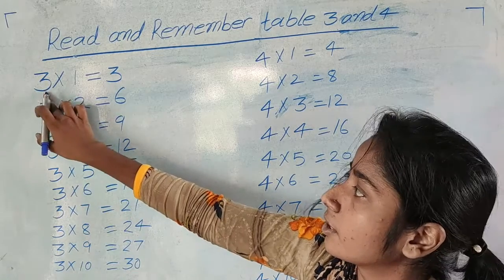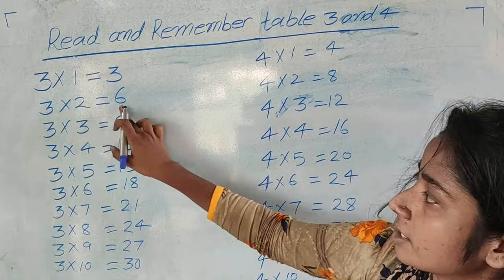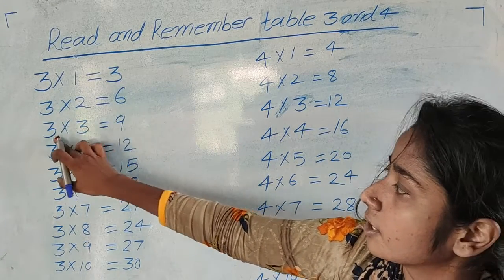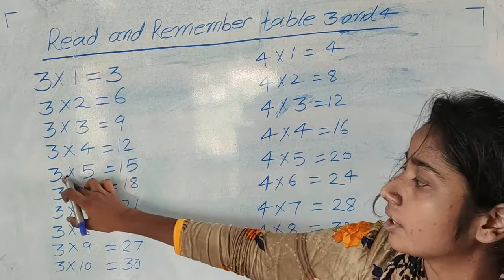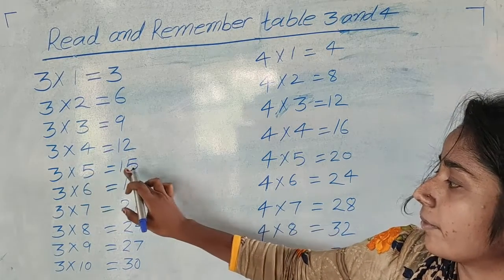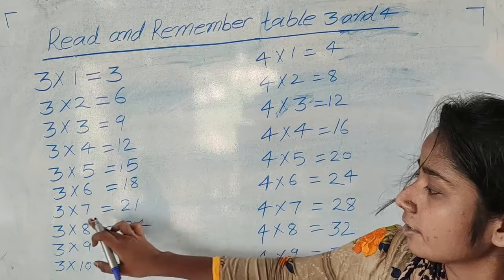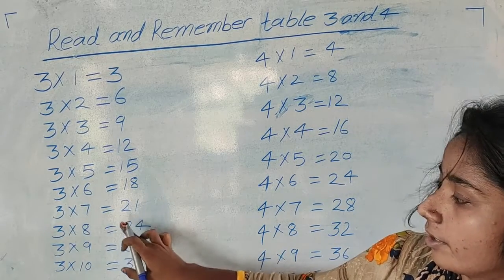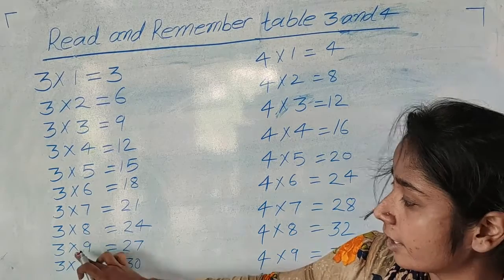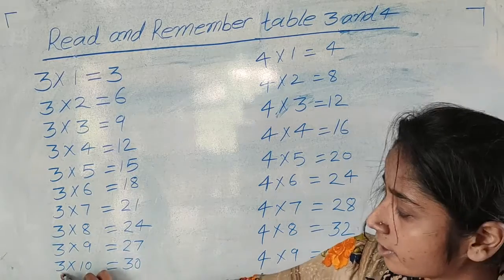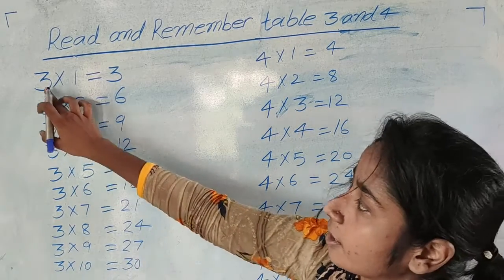फिर से देखेंगे इसे। 3 × 1 = 3, 3 × 2 = 6, 3 × 3 = 9, 3 × 4 = 12, 3 × 5 = 15, 3 × 6 = 18, 3 × 7 = 21, 3 × 8 = 24, 3 × 9 = 27, 3 × 10 = 30. फिर से देखेंगे।